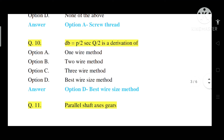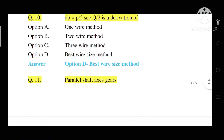Question number 10: Db = P/2 × sec(θ/2) is a derivation of which method? Option A: One wire method. Option B: Two wire method. Option C: Three wire method. Option D: Best wire size method. Correct answer is Option D — best wire size method. The best wire size formula is Db = P/2 × sec(θ/2).